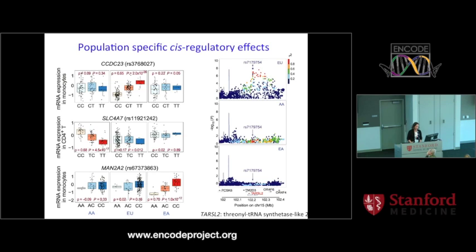Here are some examples of population-specific eQTLs showing associations in African Americans, Europeans, and East Asians. We see a European-specific eQTL, an African American-specific eQTL, and an East Asian-specific cis-eQTL. This gene Tarsal 2 shows an association only in Europeans — and this is interesting because it's one of the regions of the human genome with the most evidence for positive selection in the Caucasian population. We don't know the exact target of selection, but it's a standout in the distribution of selection coefficients.